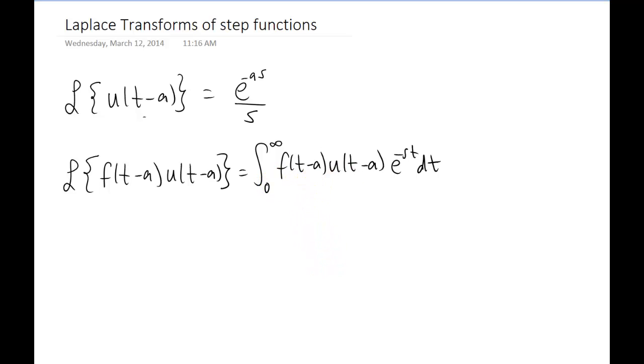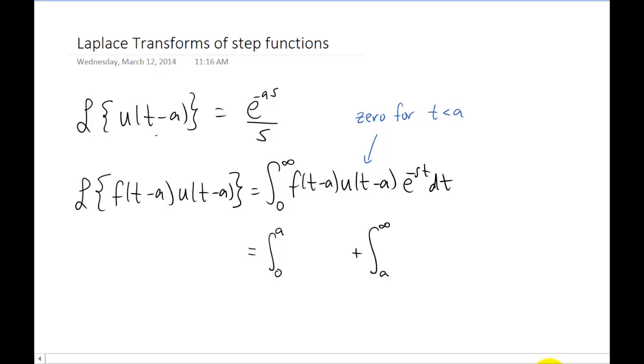Now the first thing I actually want to do here is I want to think about what this function looks like. F of t minus a, u of t minus a. So I'm going to make the argument that we should split up this integral into a piece from 0 to a and a piece from a to infinity.